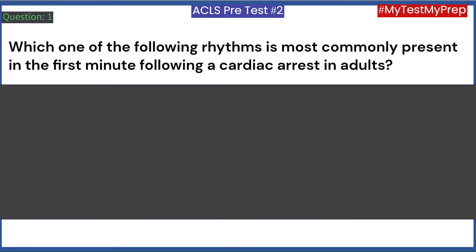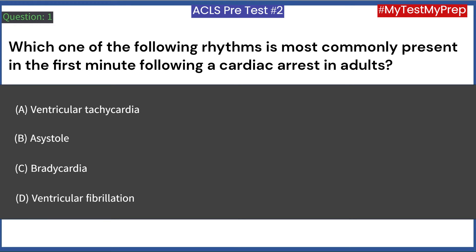Which one of the following rhythms is most commonly present in the first minute following a cardiac arrest in adults? A. Ventricular tachycardia. B. Asystole. C. Bradycardia. D. Ventricular fibrillation. Answer: D. Ventricular fibrillation.